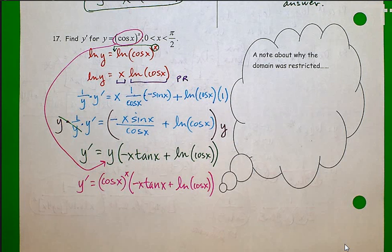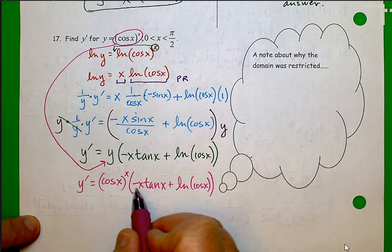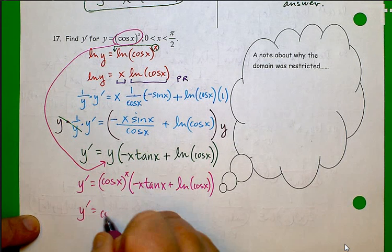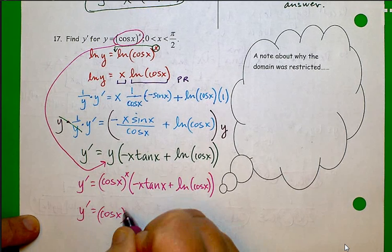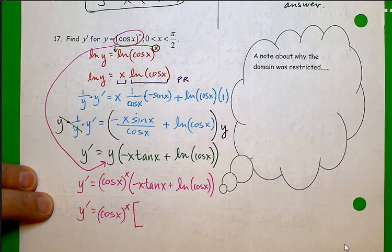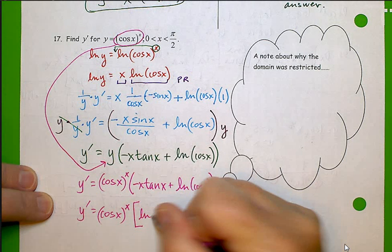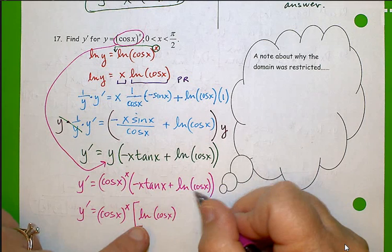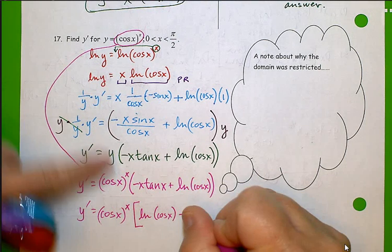And I think that's all I can do. Kind of a nicer way to write it would be to put this term second here. I'm also going to put it in brackets so I don't have so many parentheses. So positive natural log of cosine of x minus x tangent x. There we go.